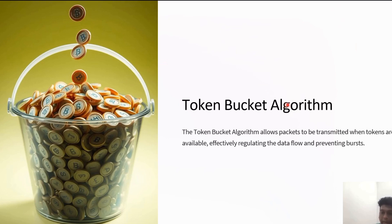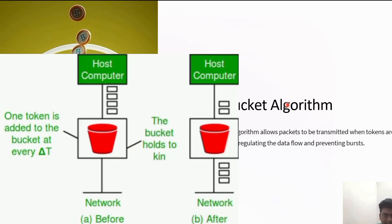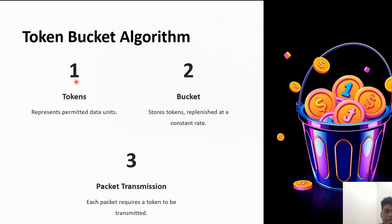The token bucket algorithm can be categorized as an open loop approach. This algorithm allows bursts for short transmissions while making sure that no data is lost. In contrast to the leaky bucket algorithm, it is not the data but tokens that are queued in a time-dependent manner. A token is needed to send a single portion of data, and the process is implemented based on tokens that represent permitted data units. The bucket stores tokens and can transmit data at a constant rate.